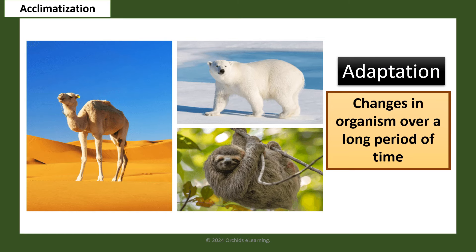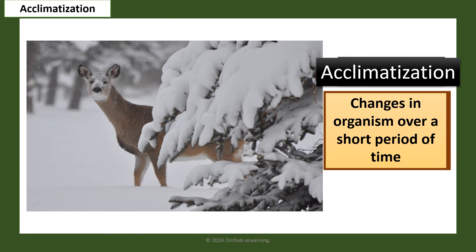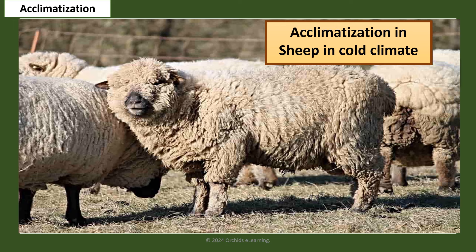Acclimatization refers to certain changes that occur in an organism over a short period of time, helping it adjust to changes in its surroundings — unlike adaptation, which refers to changes over a long period. For example, sheep grow very thick wool in a cold climate.